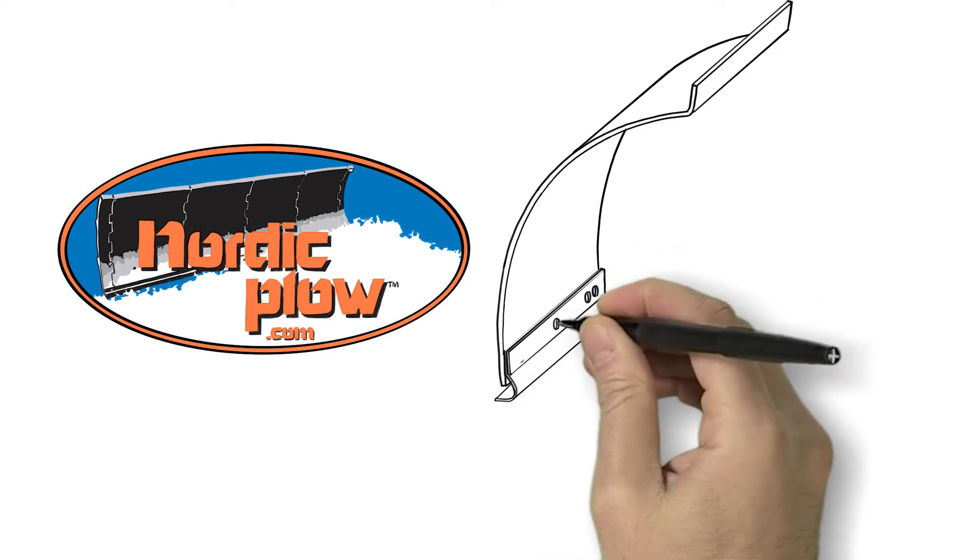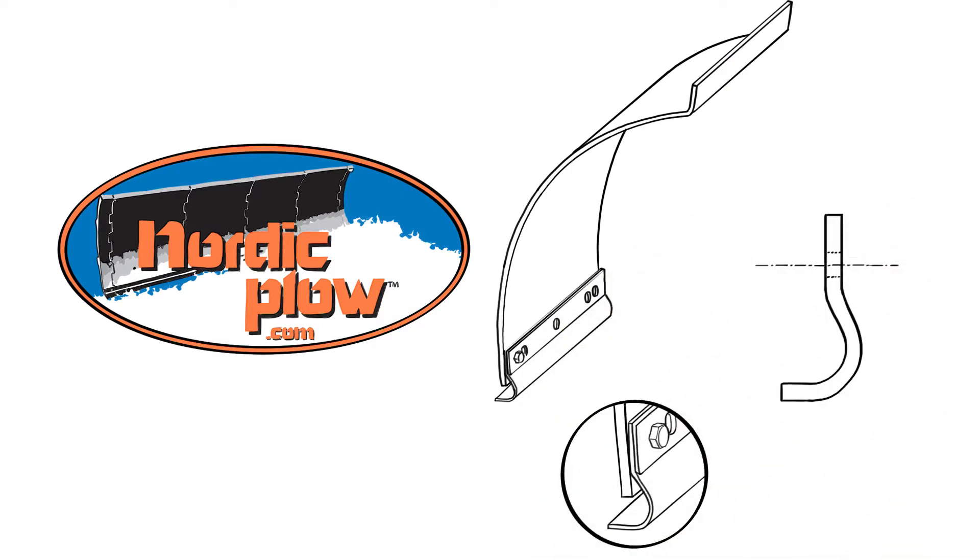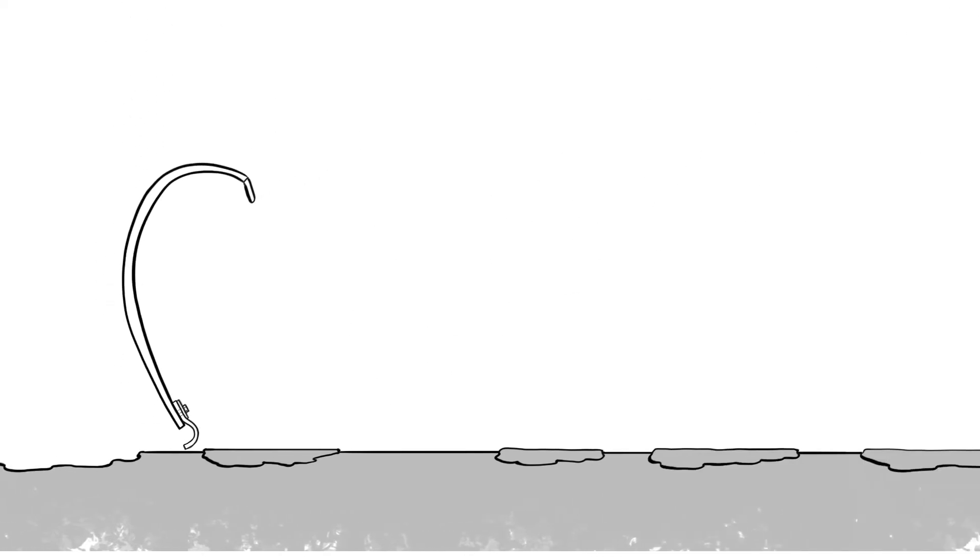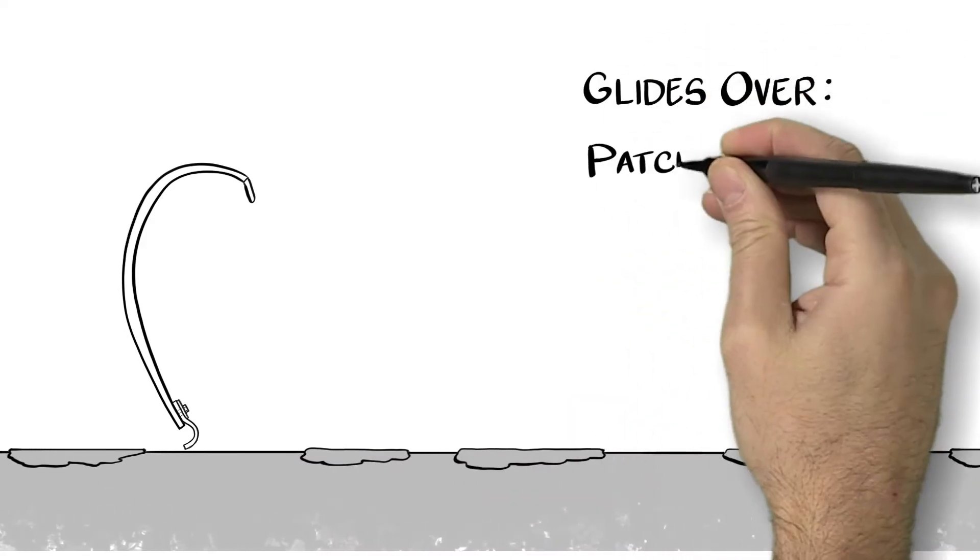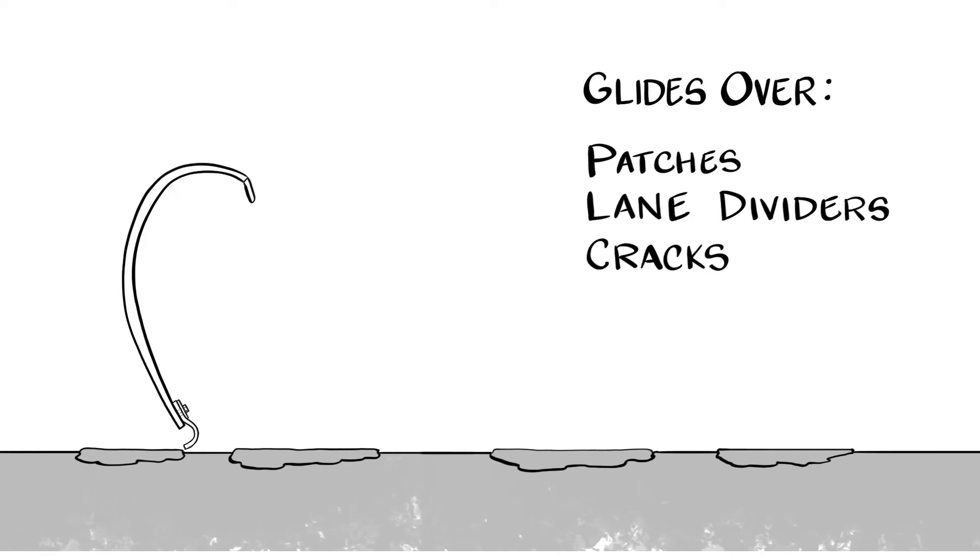Nordic Plow dared to question the norm by replacing the traditional damaging straight edge with a smoother curved design, which efficiently removes the snow and slush as it glides over patches, lane dividers, and cracks, rather than getting snagged and tearing up the road.